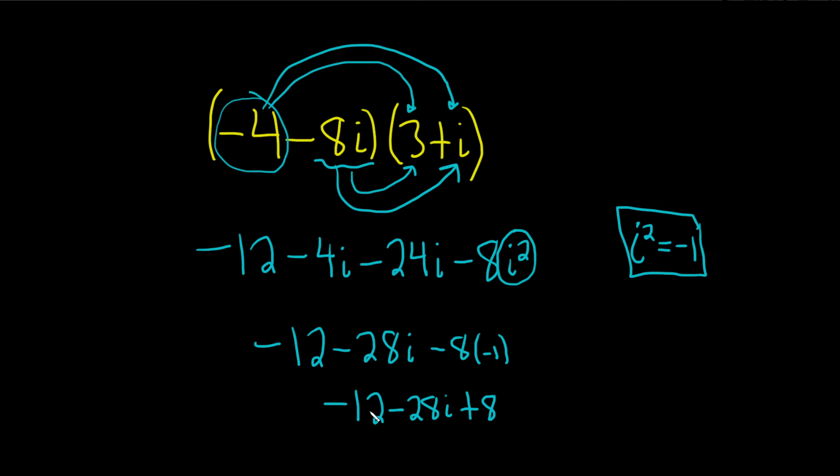And the very last step is to combine these numbers. So negative 12 plus 8 is equal to negative 4. Then we have the minus 28i, and that would be the final answer.